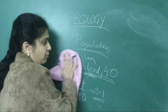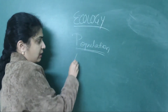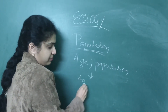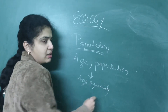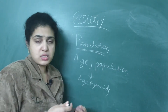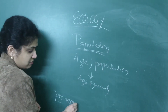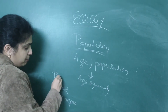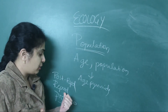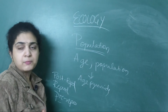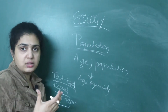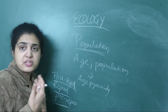When you compare age with population, it gives rise to age pyramids. There are generally three age groups in the total population: pre-reproductive, reproductive, and post-reproductive. Pre-reproductive means children; reproductive means approximately 15 to 40 years of age; above 40 is post-reproductive.